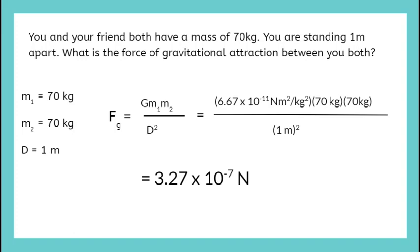For these big numbers, you see that our answer is a number that is so small, 10 to the negative 7, that you wouldn't even notice the attraction between you and your friend.